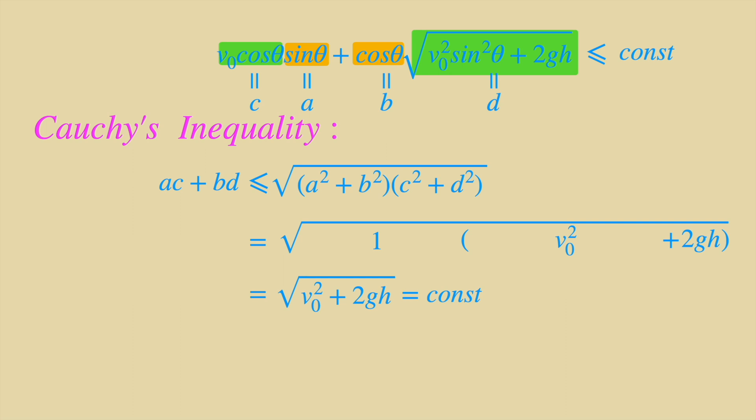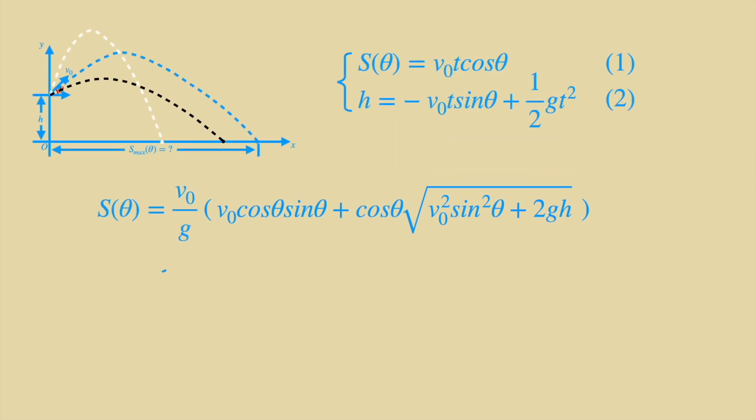What a marvelous calculation it is. Let's come back to s of theta, which is less than or equal to v0 over g times square root of v0 squared plus 2gh, and that's the maximum value of s of theta.